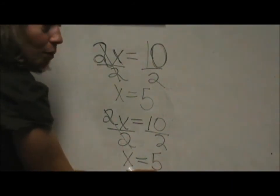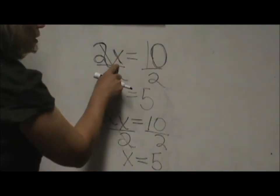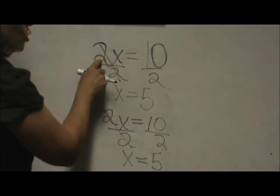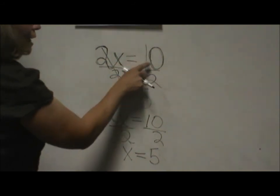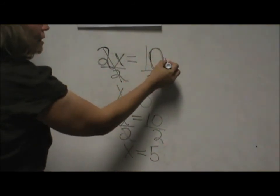Now, we can always go back and plug in our answer to check it. So since x is equal to 5, I go back up to the original equation, 2 times 5 is equal to 10. And that is a check, so that is the correct answer.